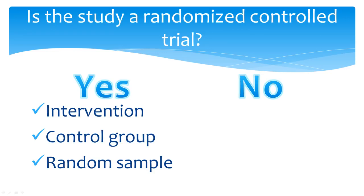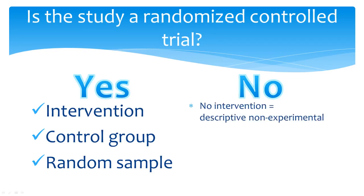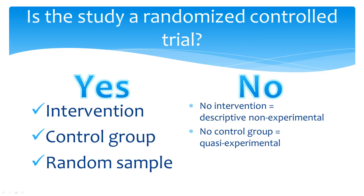You can tell the difference by looking into the methods section further. Recall that if the intervention is missing, the study is not an experiment. This type of research is observational in nature and therefore is classified as a descriptive non-experimental study. If there is no control group, then the study is quasi-experimental. A control group is a group of people that enter the study but do not receive the same intervention under study; instead, they are used for the purpose of comparison.